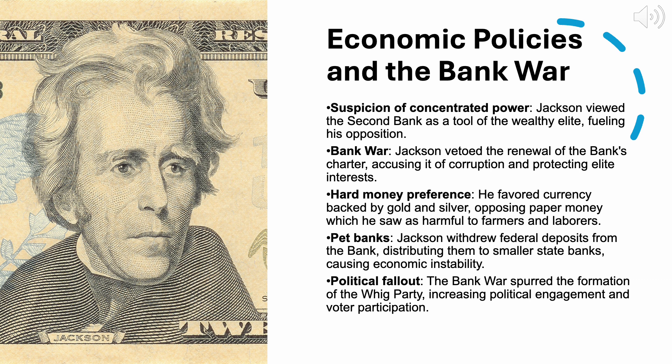After winning re-election, Jackson escalated the Bank War by ordering the withdrawal of federal deposits from the bank and distributing them to smaller state banks, known as pet banks. This move crippled the bank, as the federal government had been its largest customer. Critics accused Jackson of overstepping his authority and violating the bank's charter, while prominent politicians like Clay warned that Jackson's actions threatened to concentrate too much power in the presidency. The removal of federal deposits sparked economic chaos: Biddle responded by tightening credit, leading to a credit crunch that caused widespread economic hardship, with businesses struggling to secure loans.